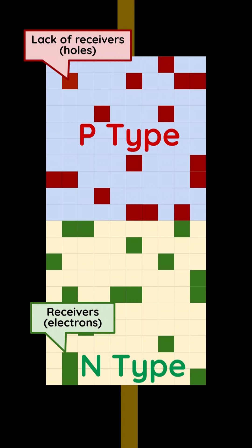The n-type has extra electrons, while the p-type has holes that lack electrons.